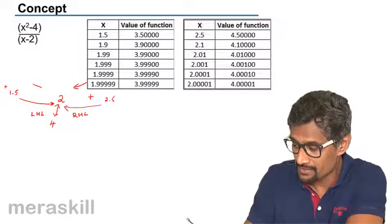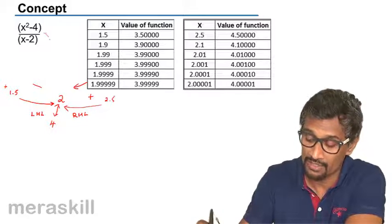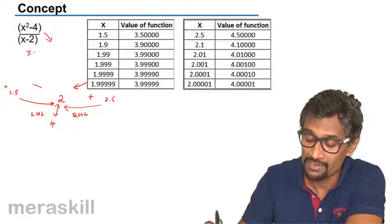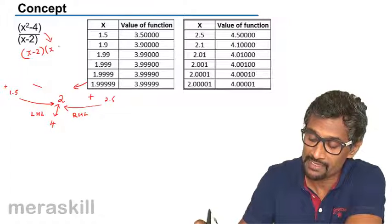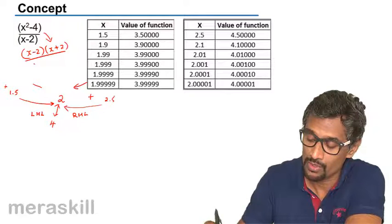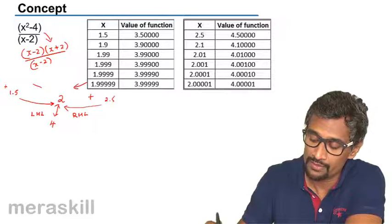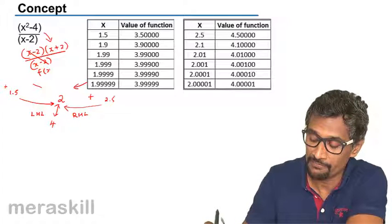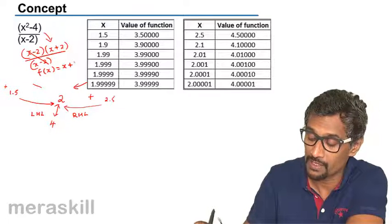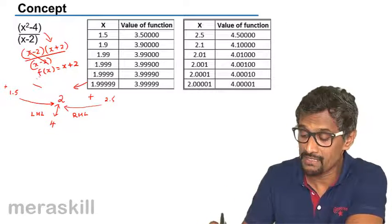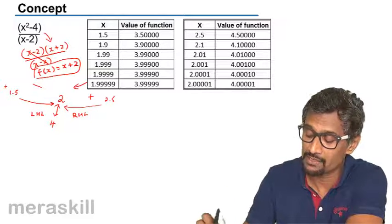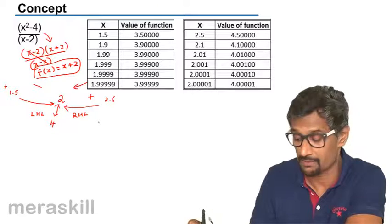So either we substitute values like this or the other way, as we have done earlier, we factorize this X minus two into X plus two upon X minus two. This gets canceled and you get F of X is equal to X plus two.